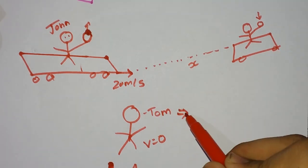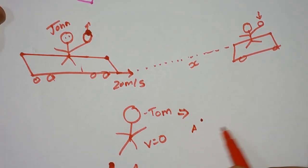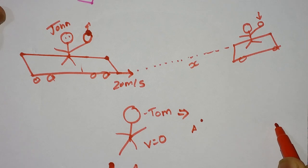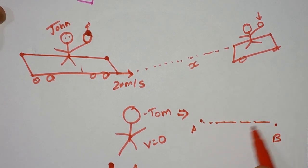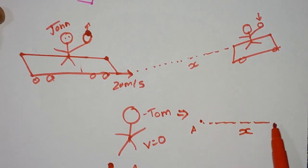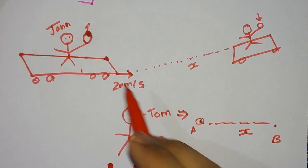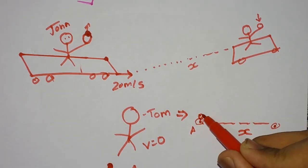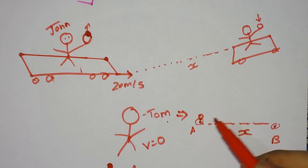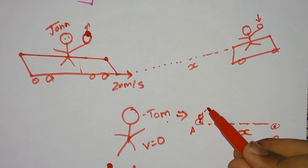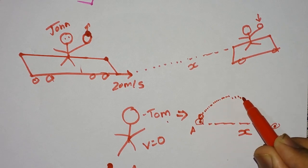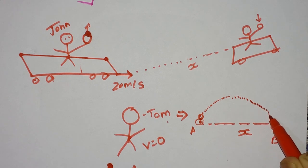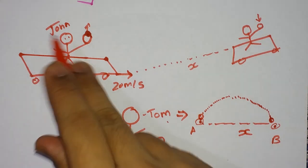According to Tom, the ball goes like this. Suppose this is point A and this is point B. This is the distance X. This is the initial position of the cart and this is the final position. Tom would see the ball going in a projectile with displacement X. The ball comes back into John's hands.